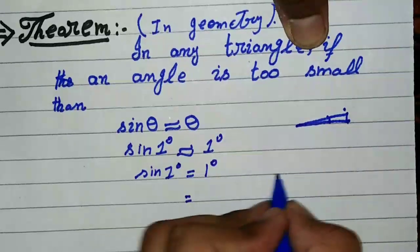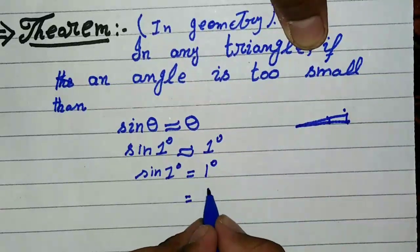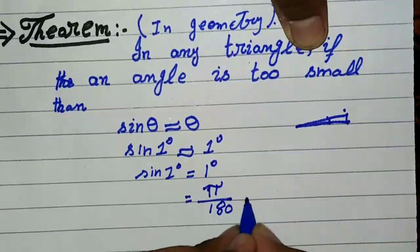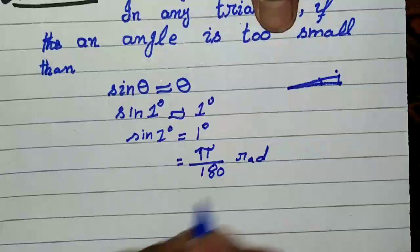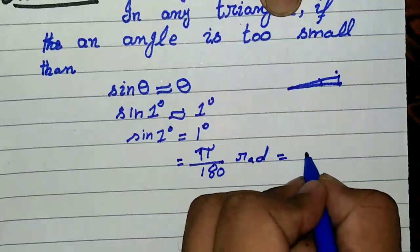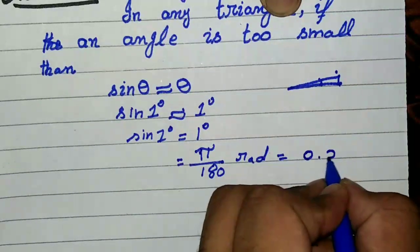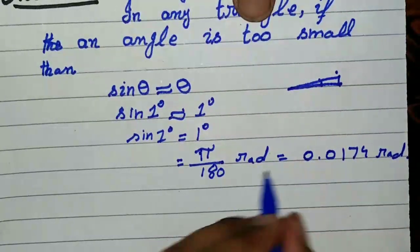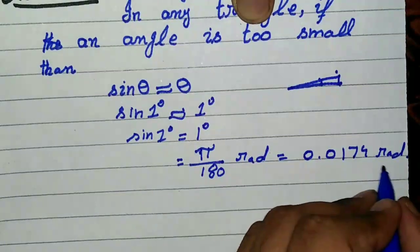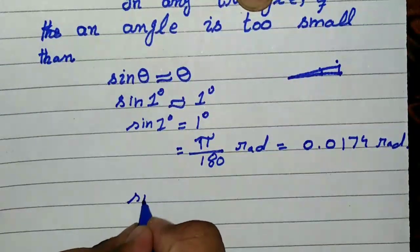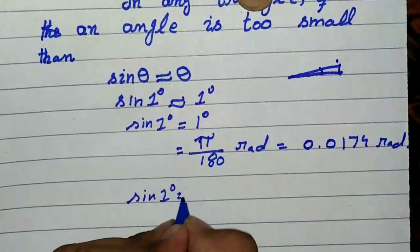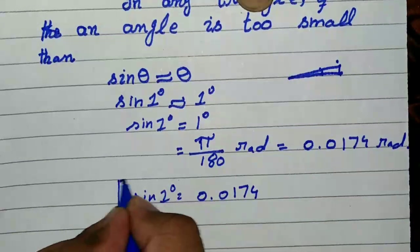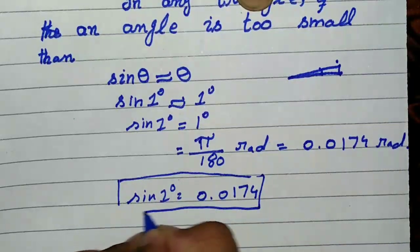The value of one degree can be determined by using the conversion from degree into radian, which is equal to pi over 180 radians. By simplifying, it equals 0.0174 radians using four decimal points. So sine one degree equals 0.0174.